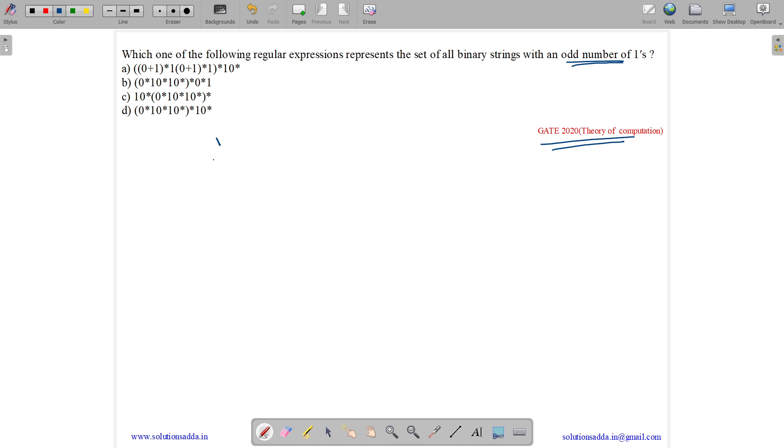Odd number of 1s means either 1, 111, 100, 1011, or anything like that, which means it has 1 one, 3 ones, 5 ones, 7 ones and so on.